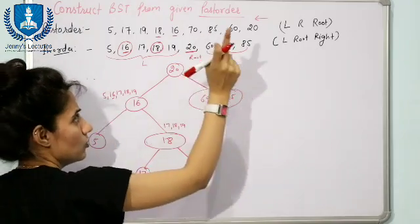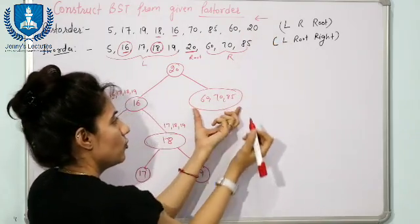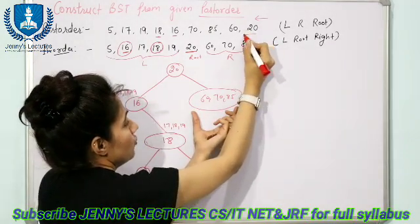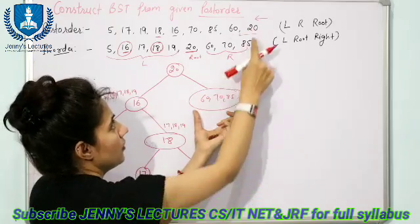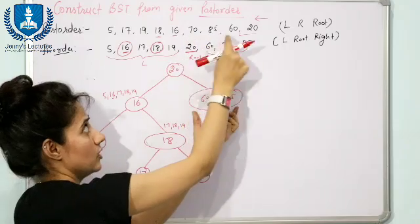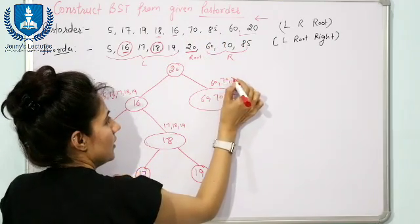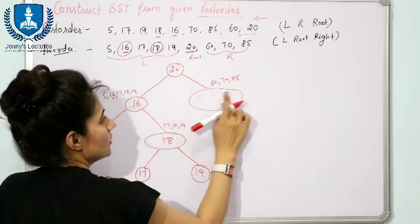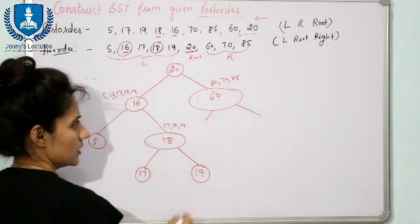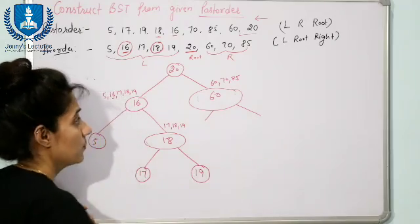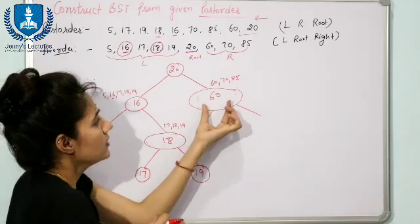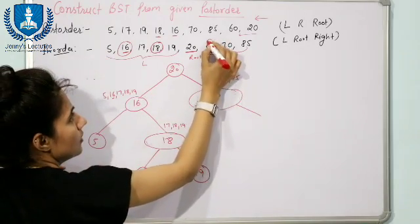Now for the right subtree, find the root out of {60, 70, 85}. Traverse the post-order from right to left — out of these elements, 60 appears first, so 60 is the root. Now find what is to the left and right of 60 by checking the inorder traversal. Locate 60 in the inorder traversal.